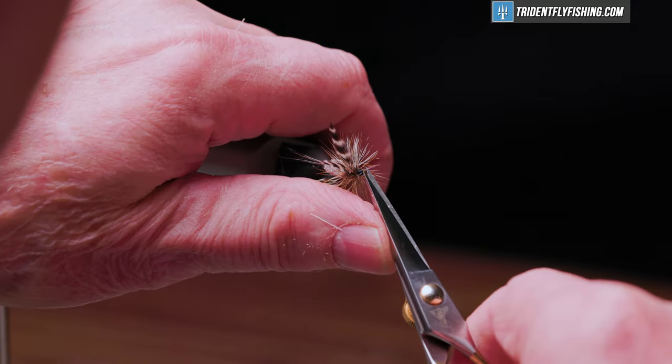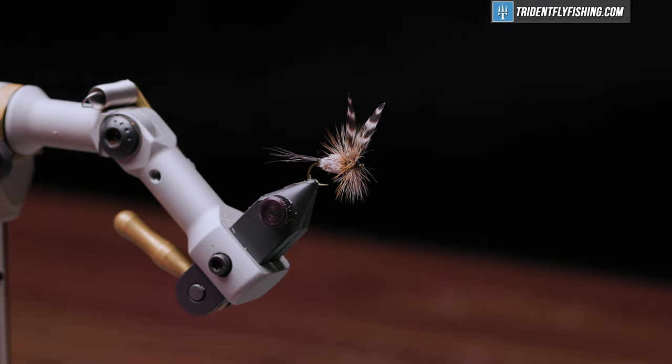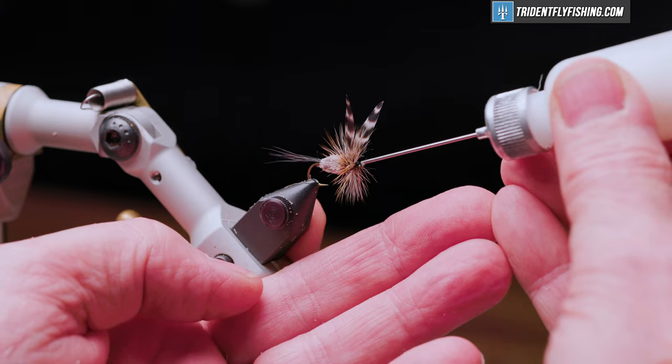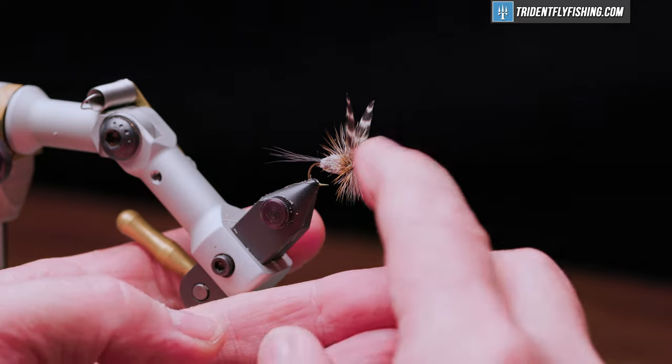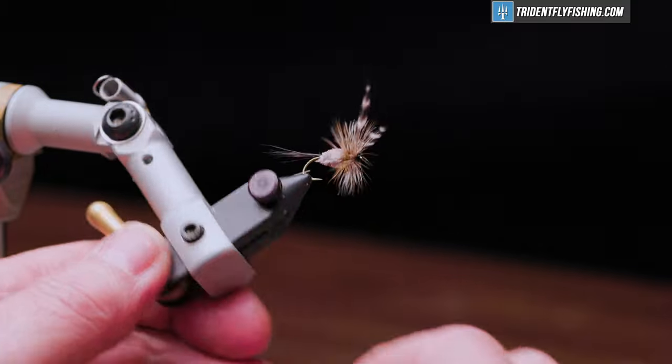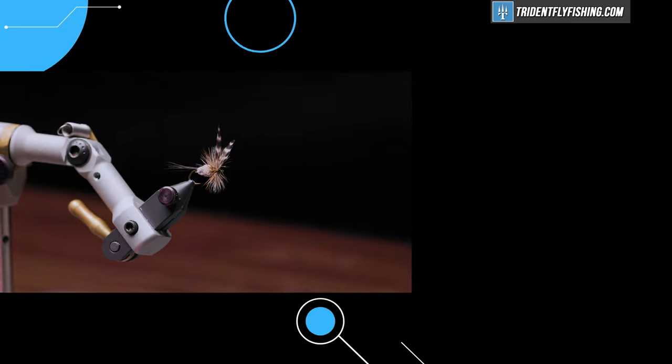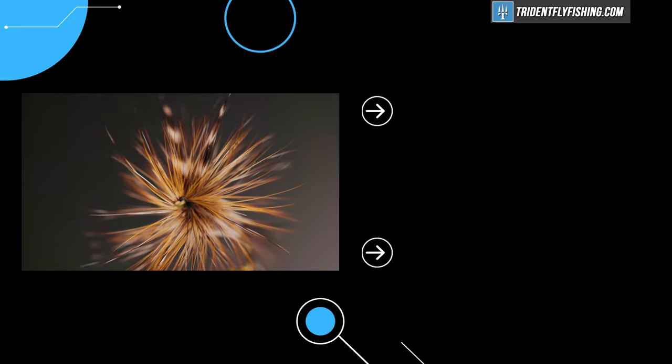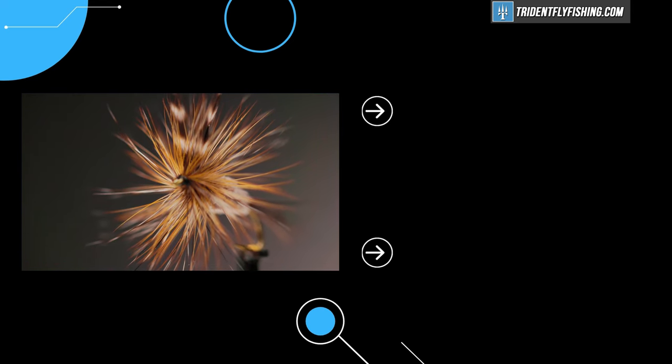Managed to catch one. And some head cement - this is Loon's water based. Work it out of the eye. And our fly is finished. Please feel free to add comments at the bottom of the page, and don't forget to hit that subscribe button to view all the new content here at Trident Fly Fishing. Thanks for watching, hope to see you again next time.